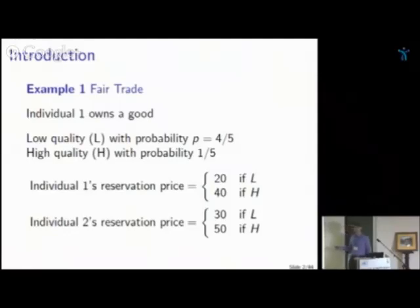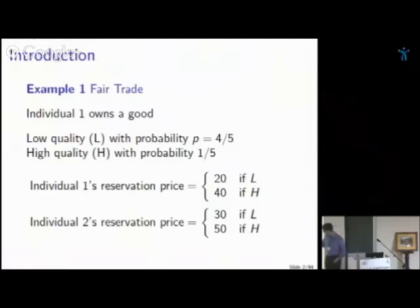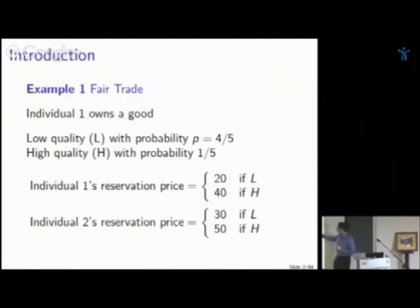There's been a lot of work on this kind of example, and we understand pretty well what kinds of contracts are feasible. One class of results in mechanism design are impossibility results — for instance, in this kind of environment, you cannot find a contract which is first-best efficient. With these values, whatever the quality of the car, it's always profitable to trade: individual two always values the good more than individual one.